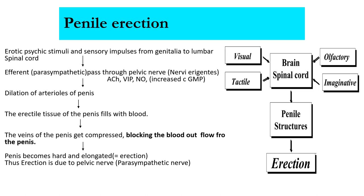The mechanism of penile erection: erotic psychic stimuli and sensory impulses from the genitalia pass through the lumbar spinal cord. Efferent parasympathetic nerves pass through pelvic nerves (nervi erigentes), which produce acetylcholine, VIP, and nitric oxide, increasing cyclic GMP production. This leads to dilatation of arterioles of the penis; the erectile tissues fill with blood; the veins of the penis get compressed, blocking blood outflow. The penis becomes hard and elongated. Thus, erection is mediated by the pelvic nerve or parasympathetic nerve.